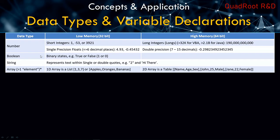Moving on to Boolean, which are binary states like true or false, one or zero. Then you have strings, which represent text within single or double quotes. For example, '2' between double quotes is considered text and is not used in mathematical operations. Or you can have 'hi there' with a space in between, within quotes.